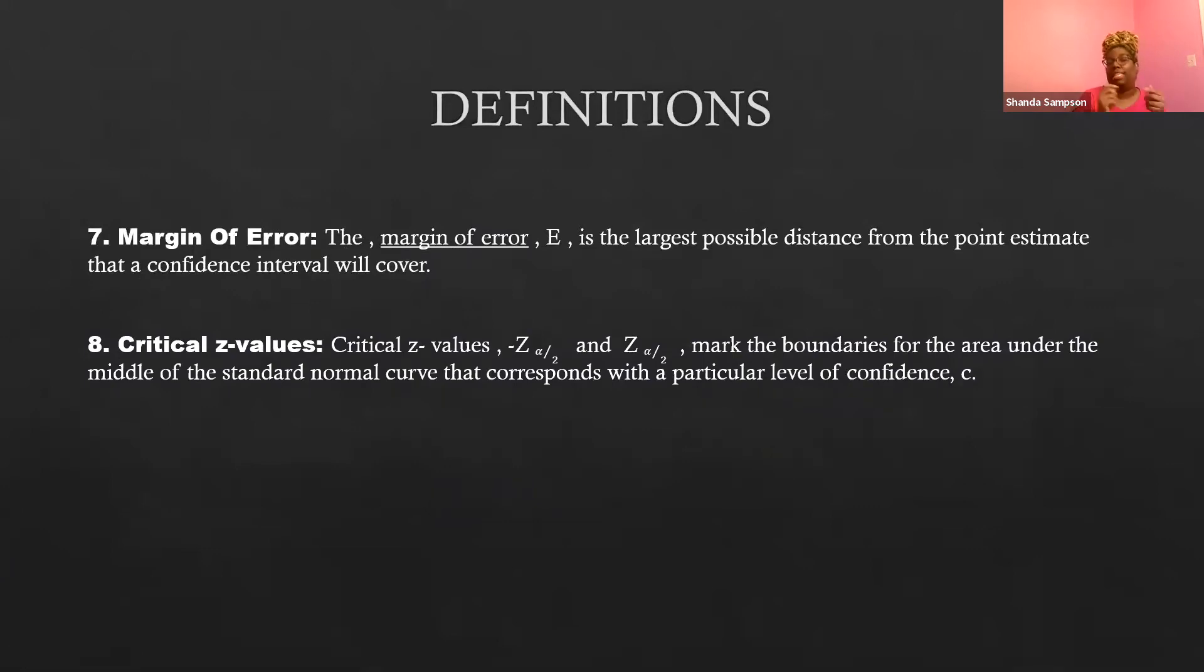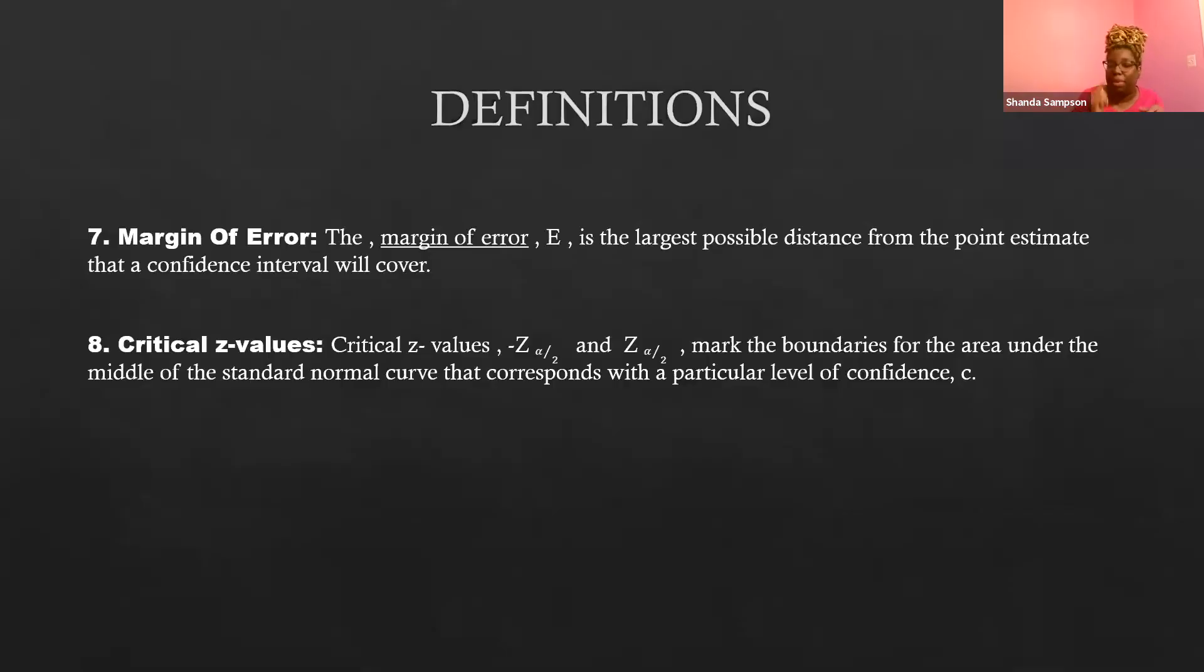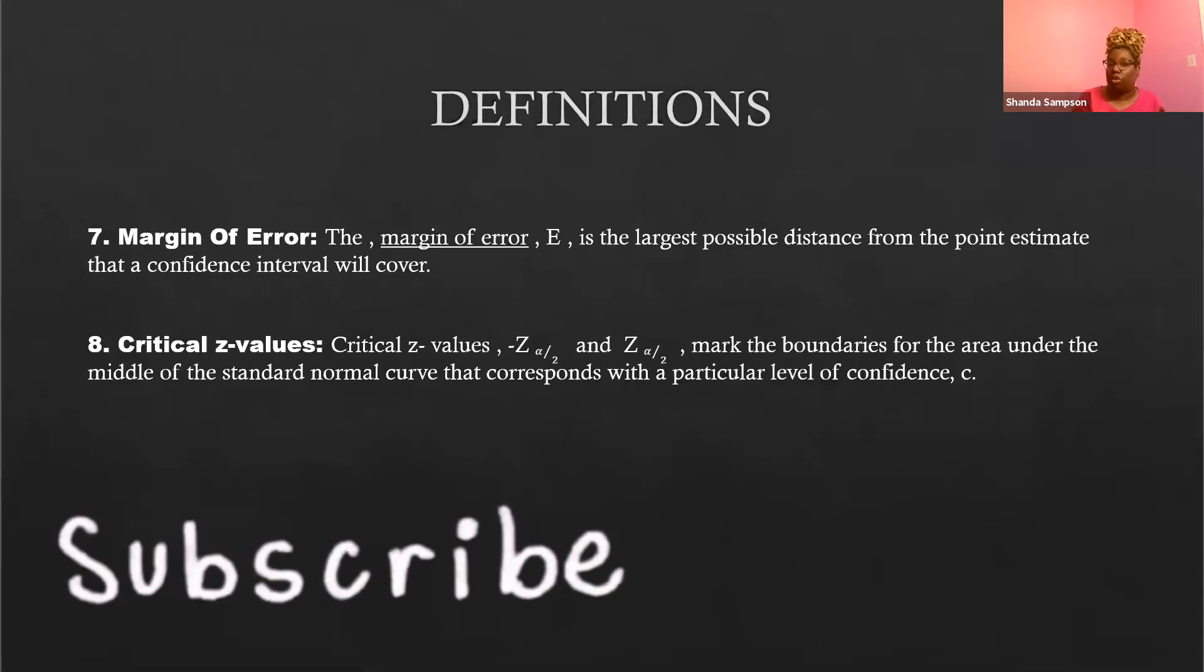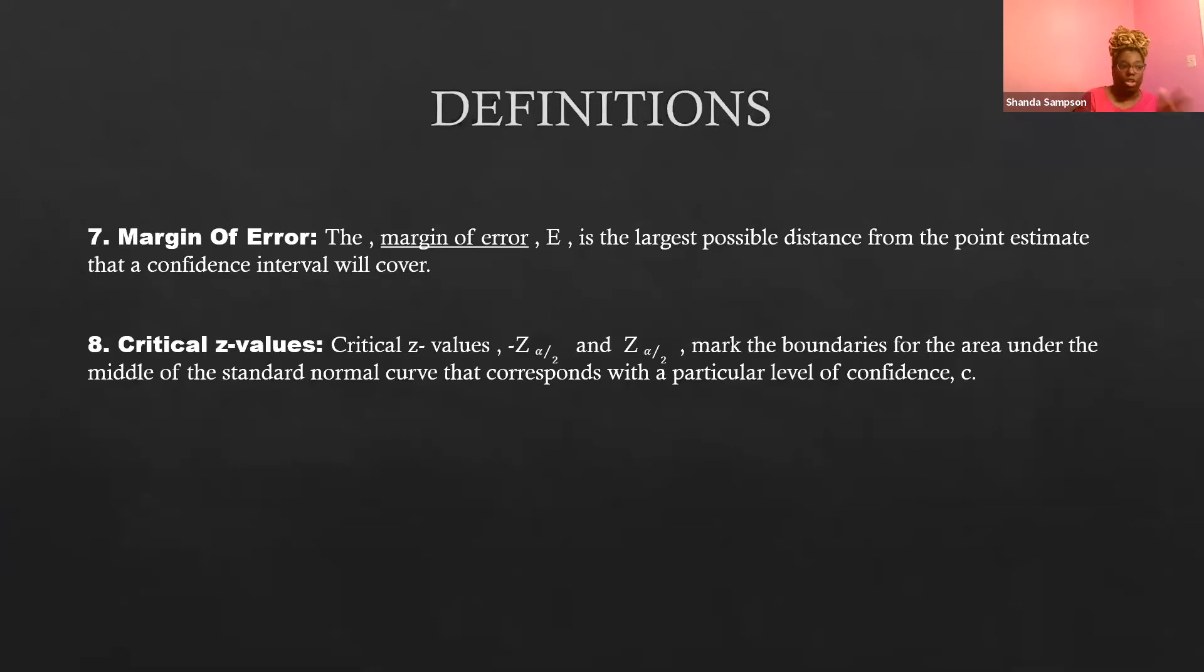And the last definition that I want to put up here is critical Z value. A critical Z value labeled negative Z alpha over two and Z alpha over two. So one is negative, one is positive. Marks the boundaries for the area under the middle of the standard normal curve that corresponds with a particular level of confidence. Think about the area under the curve we just covered. And it's going to be those boundaries that we made when we worked on the area under the curve, but we're going to use our confidence level to determine what those boundaries are going to be.